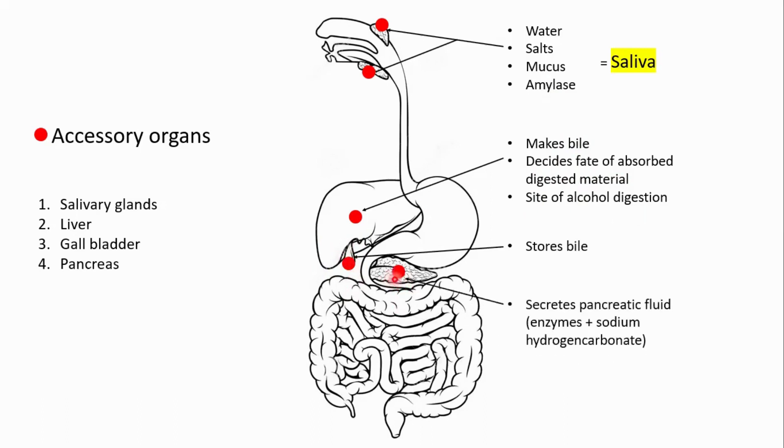And finally we have the pancreas. The pancreas, apart from its role in regulation of blood sugar levels, secretes pancreatic fluids into the lumen of the gut. And this pancreatic fluid has enzymes necessary to complete digestion as well as a base which is the sodium hydrogen carbonate, and we'll see in a little while why this base is necessary.